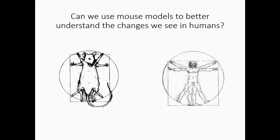In the end, we went for the PYMT model. This is a model actually developed in Harvard here in America by Muller and colleagues in 1988. The reason this is such a nice model is because firstly, it's spontaneous, which makes it relevant. And as you see, it really nicely reflects the evolution of ductal carcinoma in humans. So you go from having this hyperplastic lesion through to adenoma, early carcinoma and late carcinoma. And you can see on the H&E staining that's nicely reflected — you get the same cellular morphology, but also from a biomarker profile.